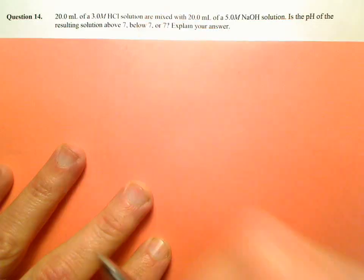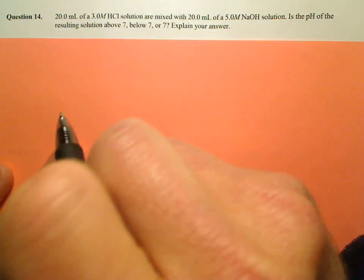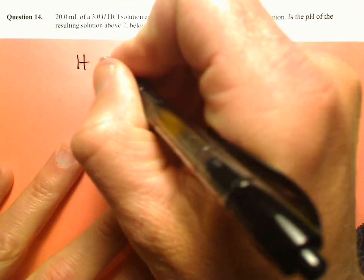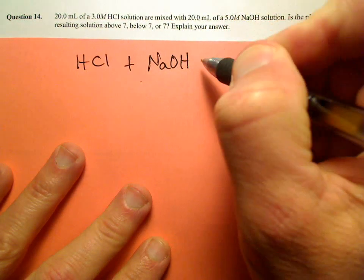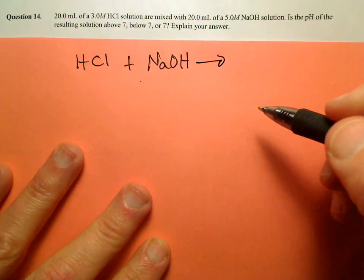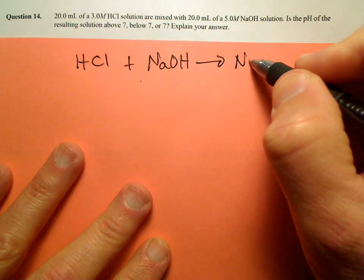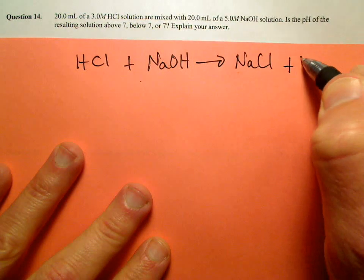Well, first thing you need to know is the balanced equation because there's a reaction that occurs. We know that HCl reacts with sodium hydroxide. What does it form? Same thing we've had it form forever. It makes some sodium chloride and water.